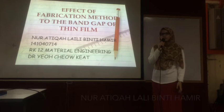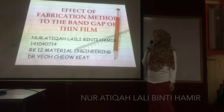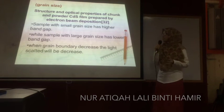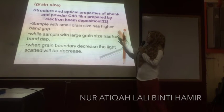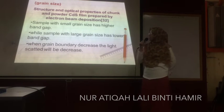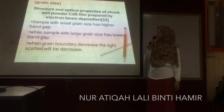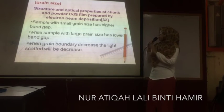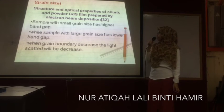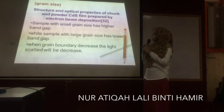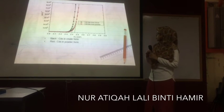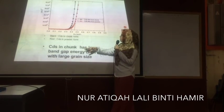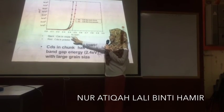Good morning, Dr. Leo. I'm Azkanda Aiden Lina Amir. I will discuss the effect of fabrication method on the band gap of thin-films. There are three parameters: first is grain size. Referring to our journal on the structural and optical properties of thin and powder CdS films prepared by electron beam deposition — a sample with small grain size has a higher band gap, while a sample with large grain size has a lower band gap. When the band gap decreases, light scattering will decrease. The thin film has a lower band gap of 2.4 eV, while the powder is 2.45 eV.